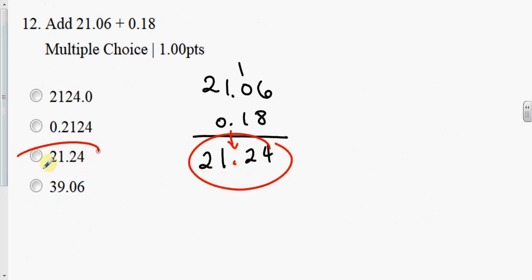Add these two decimals, 21.06 plus 0.18. From top to bottom, up down, line the decimal up. That's the key. And then just add as normal. 6 plus 8 is 14. Bring the decimal down. So the answer is 21.24.